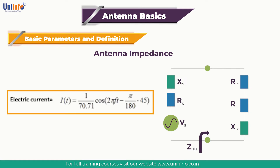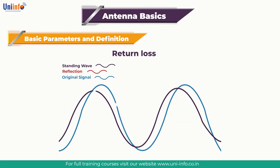The real part of the antenna impedance represents power that is either radiated away or absorbed within the antenna. The imaginary part of the impedance represents power that is stored in the near field of the antenna — this is non-radiated power. An antenna with a real input impedance, meaning zero imaginary part, is said to be resonant. Note that the impedance of an antenna will vary with frequency.